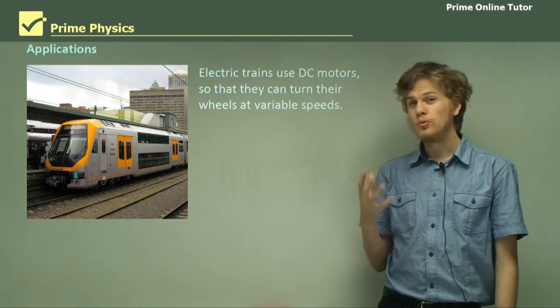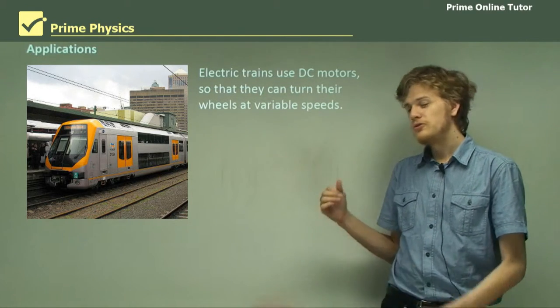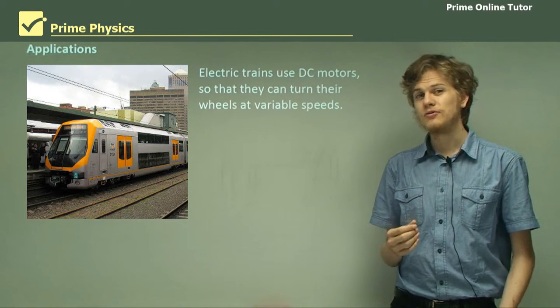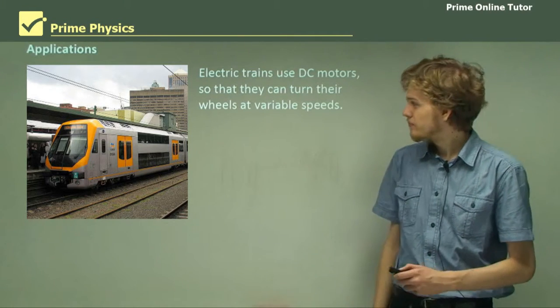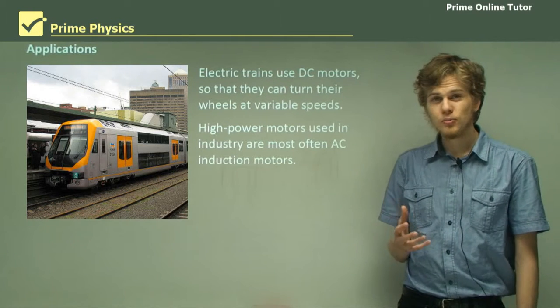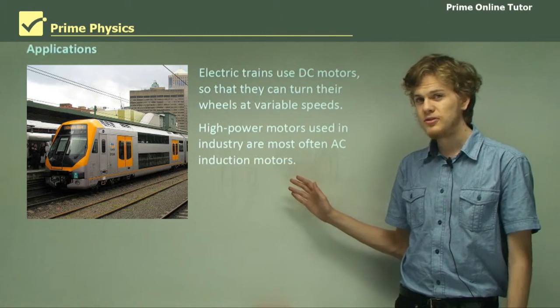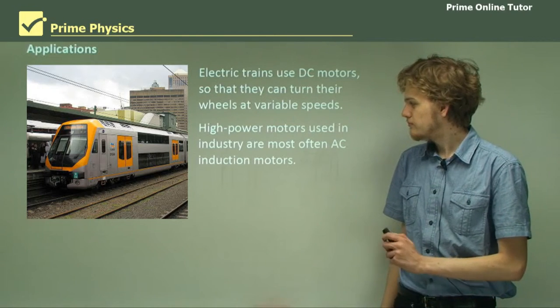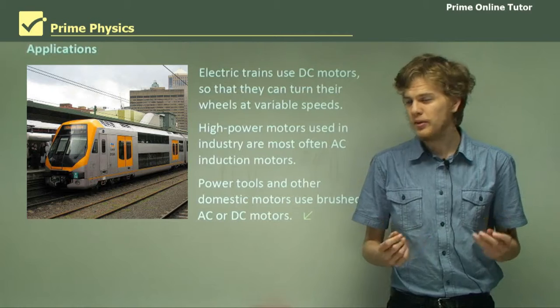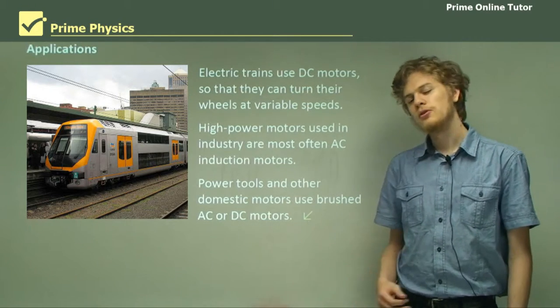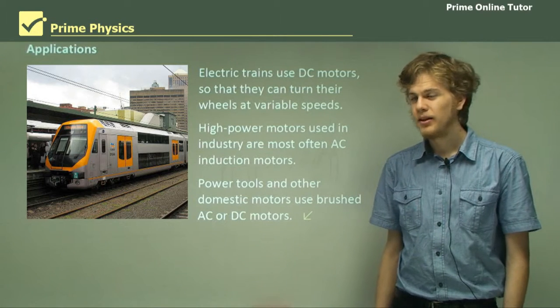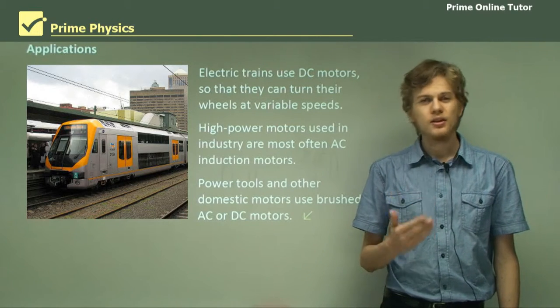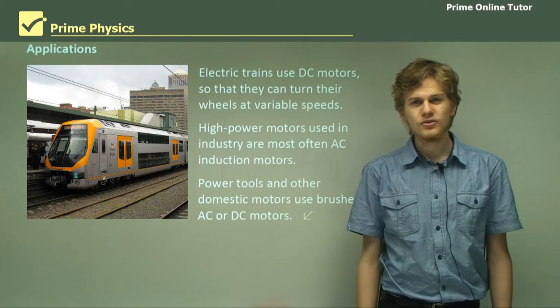Now electric trains are one important use of DC motors. They use DC motors in order to turn the wheels of the train, because this means that they can control their wheels at variable speeds. It doesn't always have to be a constant speed, like an AC motor needs. If we look at high-power industrial motors, then we generally tend to use AC induction motors, because we have a lot of power to spend, and we often need to turn very large loads. Power tools and other domestic appliances that we might use at home will use either AC or DC motors, because these require only a low amount of power. So that's the end of the theory. We've compared various different types of motors, including standard AC motors, DC motors, and AC induction motors. Let's go on to some questions.